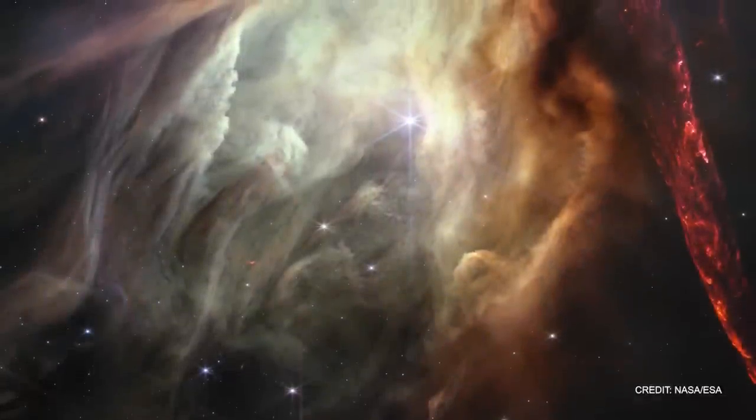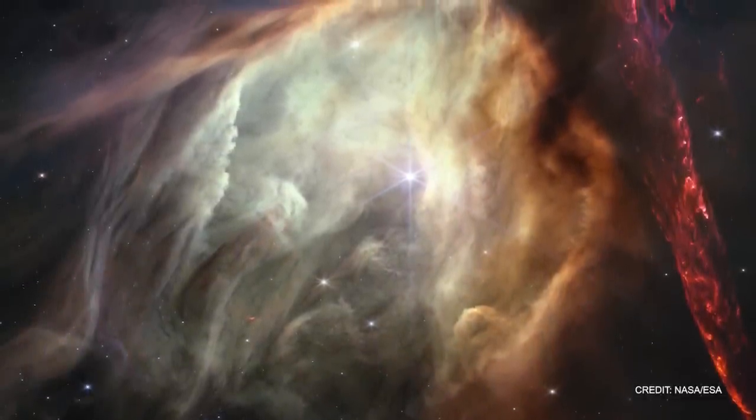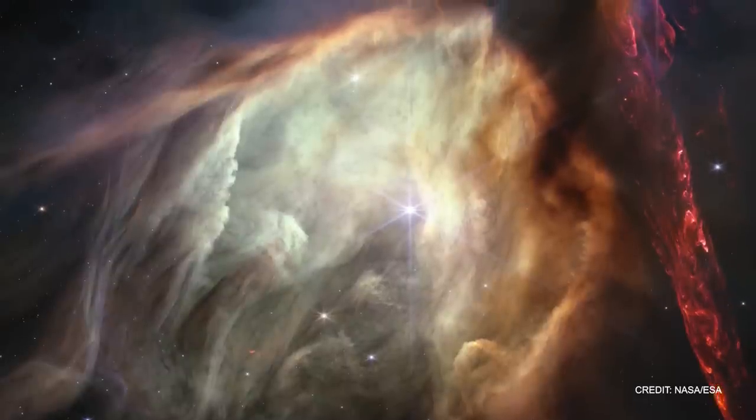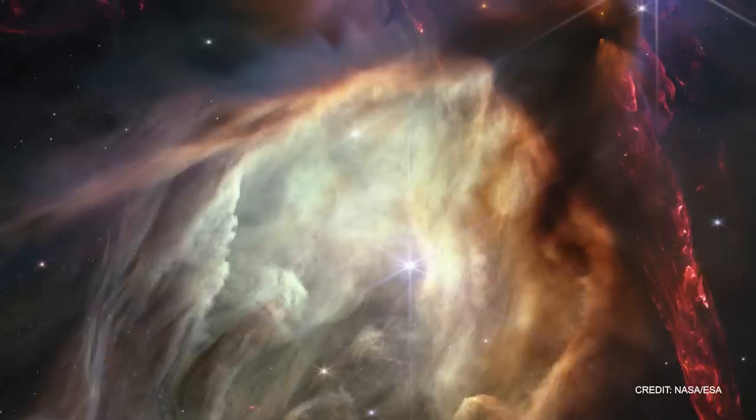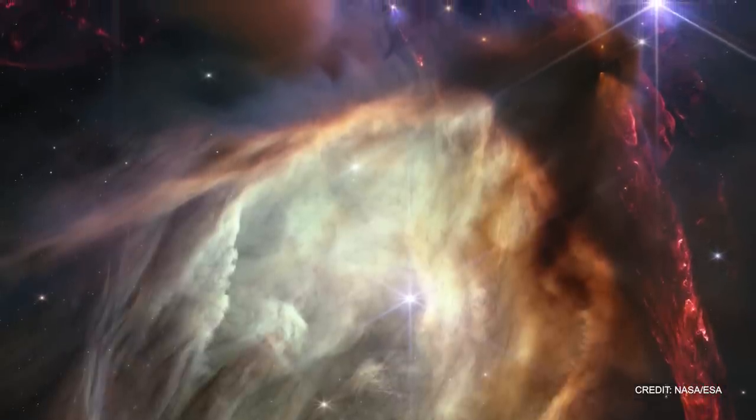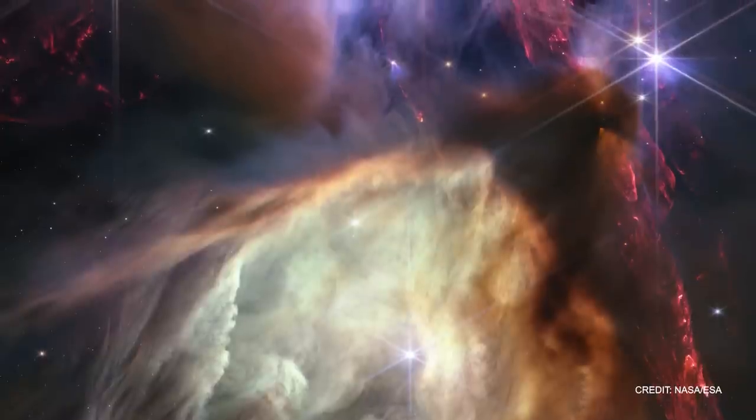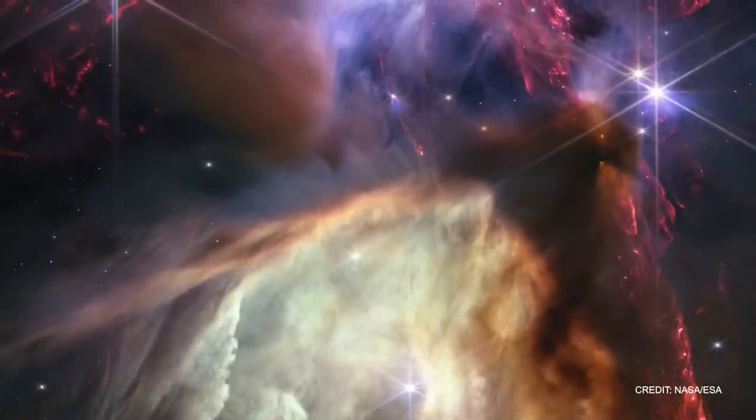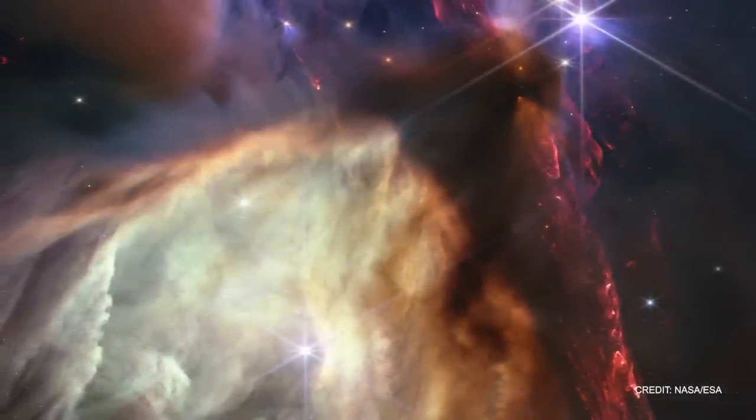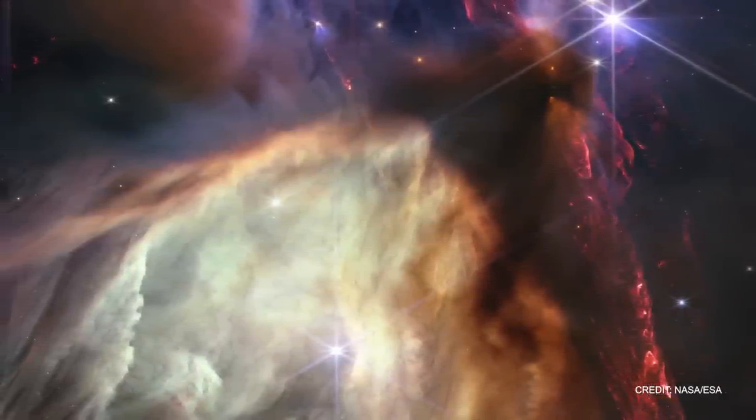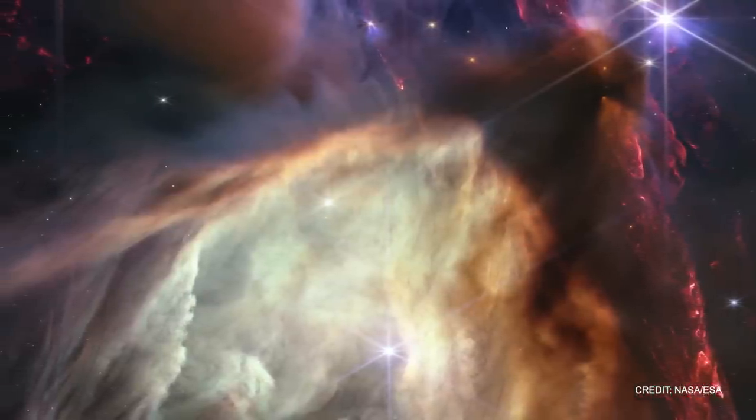Nestled within the constellation of Ophiuchus, the Rho Ophiuchi is the nearest star-forming region to our blue planet. It lies at a distance of 390 light-years from Earth, making it an enchanting spectacle for telescopes like Webb. Although it may seem like a considerable distance, it's only a small leap in the astronomical context. Picture a celestial theater that is approximately 0.7 light-years or 6.4 arc-minutes across.